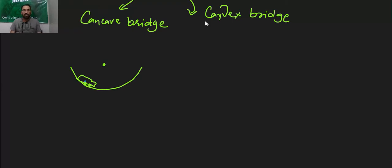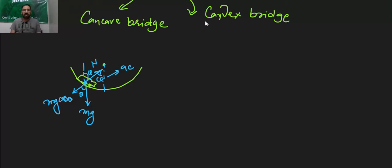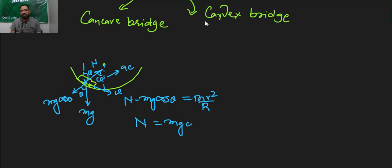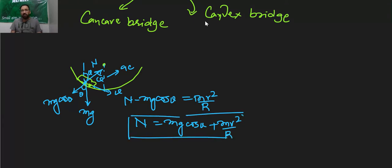The weight of the car is acting vertically downward, and the normal reaction due to the road on the car is N. If this angle is theta, then this angle will also be theta, and this component of weight toward the center is mg cos theta. Using Newton's second law along the centripetal direction: N minus mg cos theta equals mv² upon r, where v is the velocity of the car. So N equals mg cos theta plus mv² upon r. This is the normal reaction acting on the car due to the concave bridge.